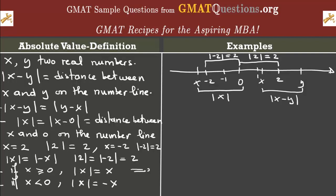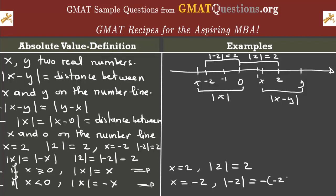In the case when x is positive, we can choose x equal to 2. In that case, the absolute value of 2, as we already know, is equal to 2. But in the case where x is a negative number — x less than 0 — we can choose x equal to negative 2. Then the absolute value of negative 2 is not equal to negative 2. We need to write that this equals minus negative 2, which equals 2. This comes from the definition: the absolute value is a distance, so it cannot be negative — it has to be 0 or positive. That's why if you know a number is negative, we apply a negative sign to make it positive.